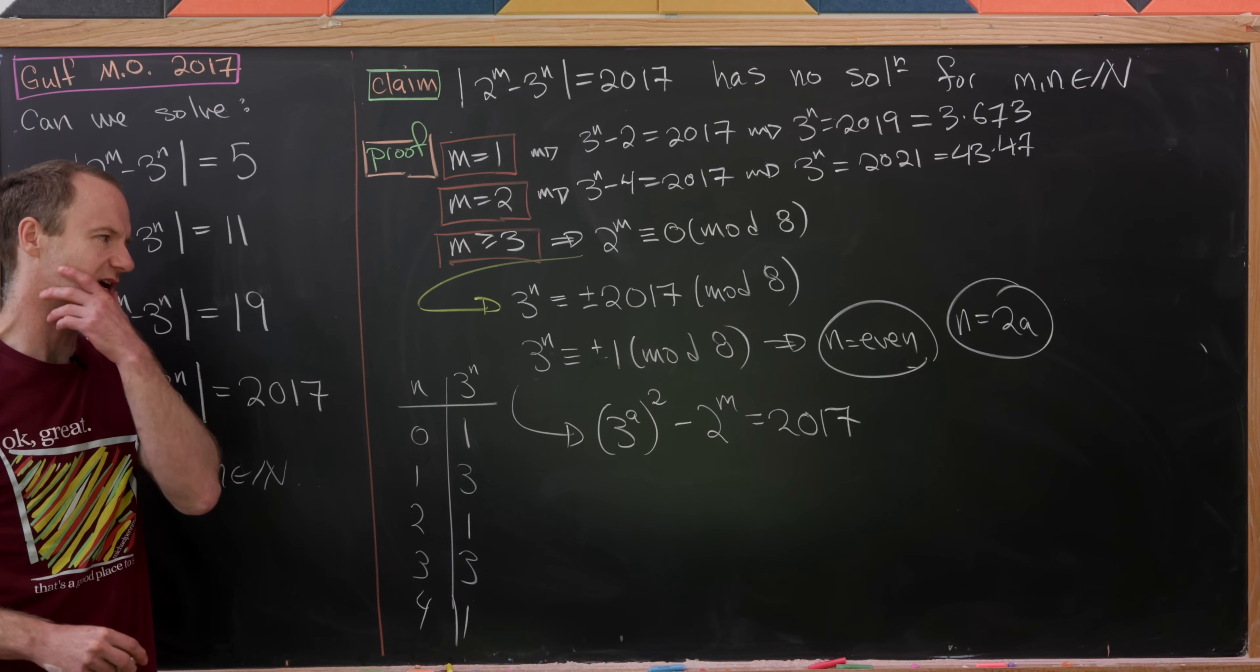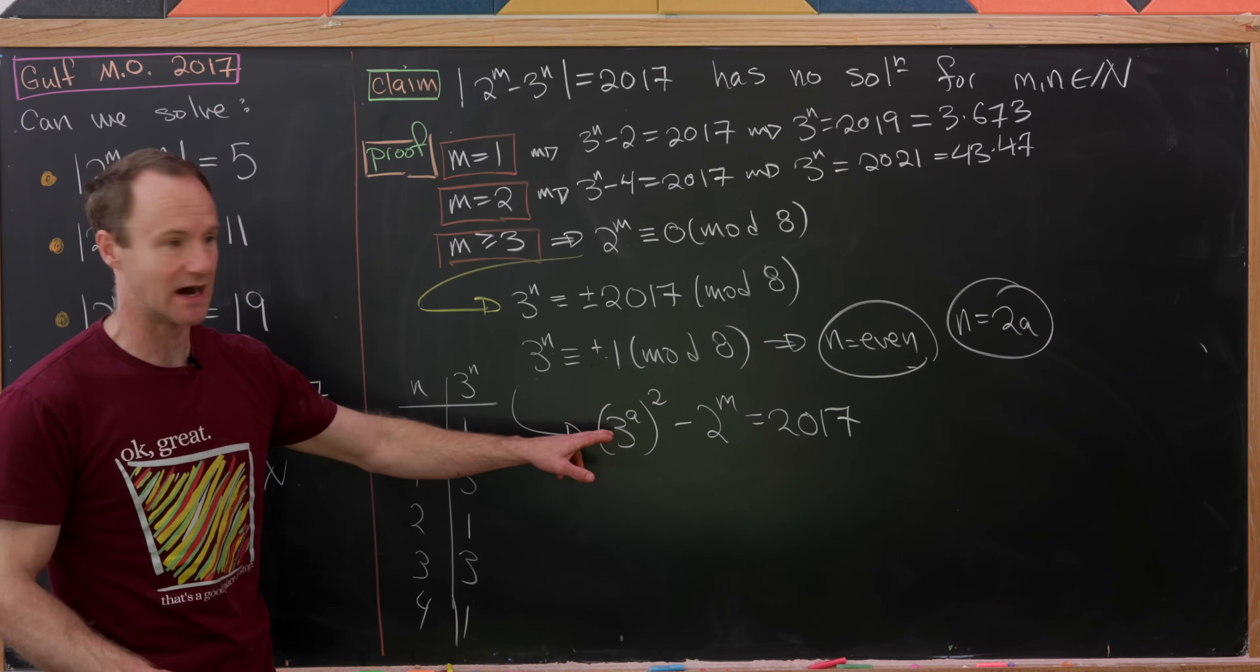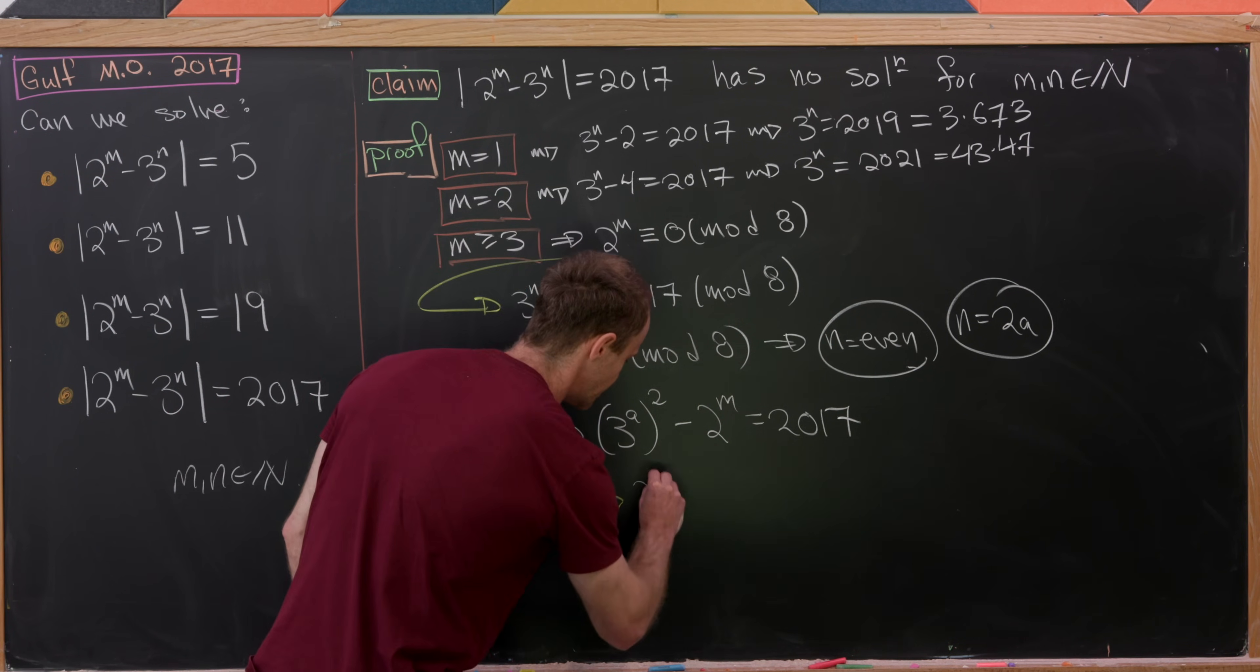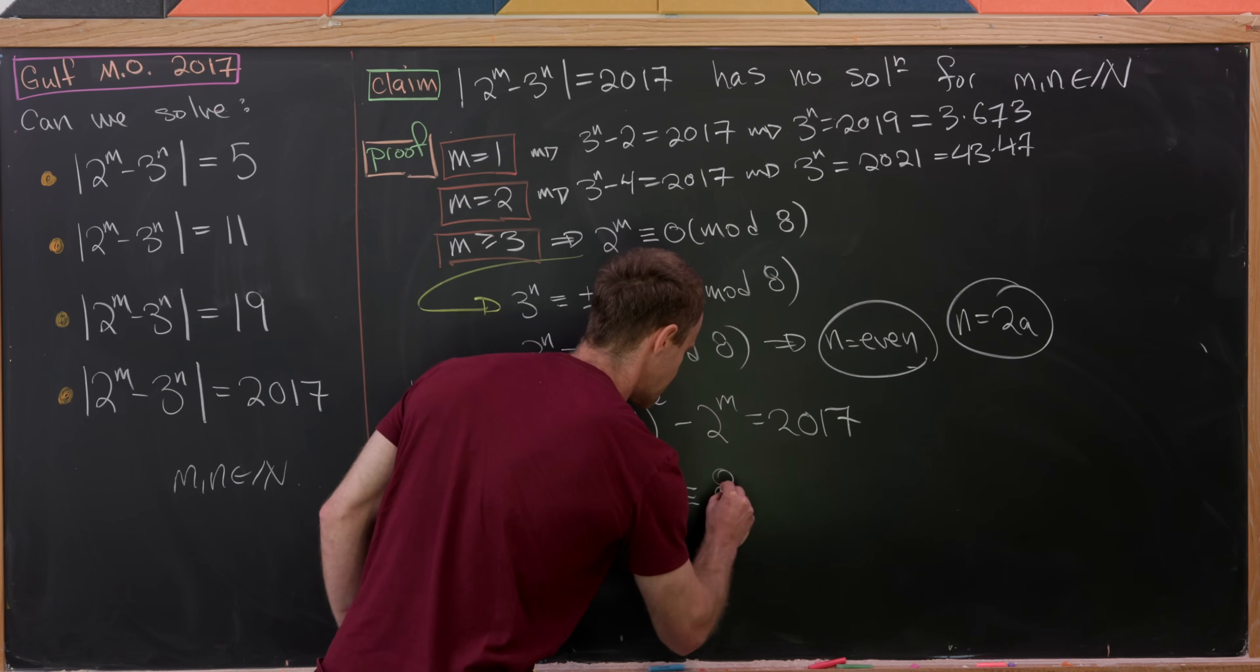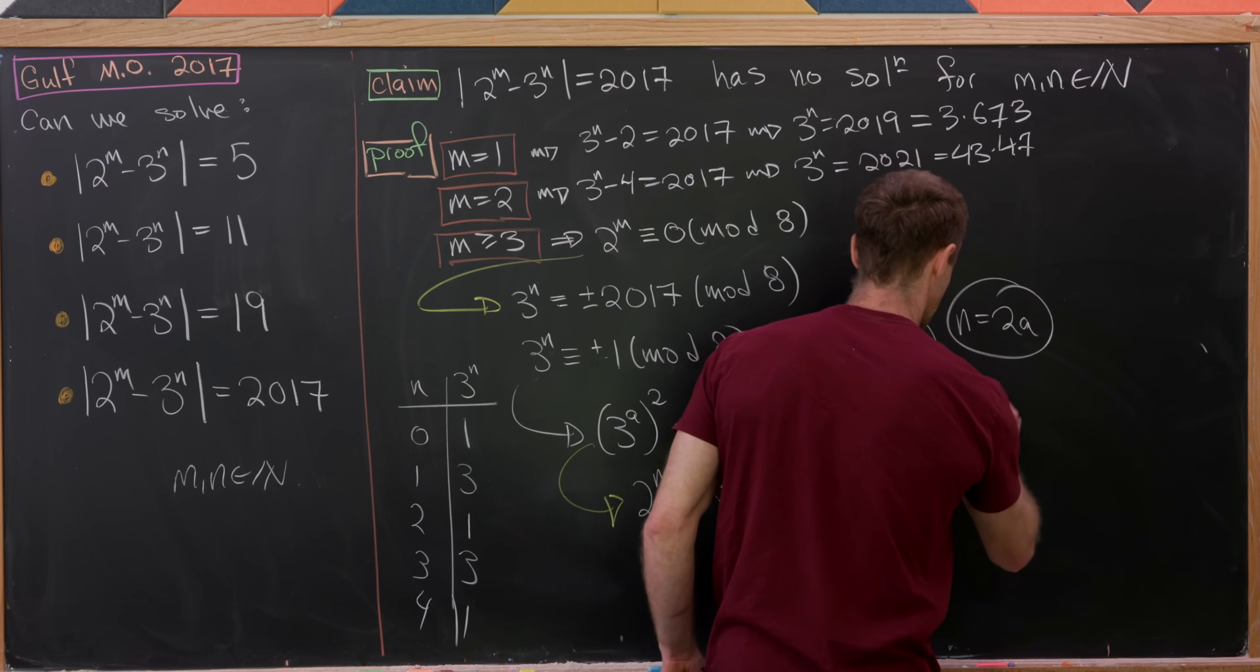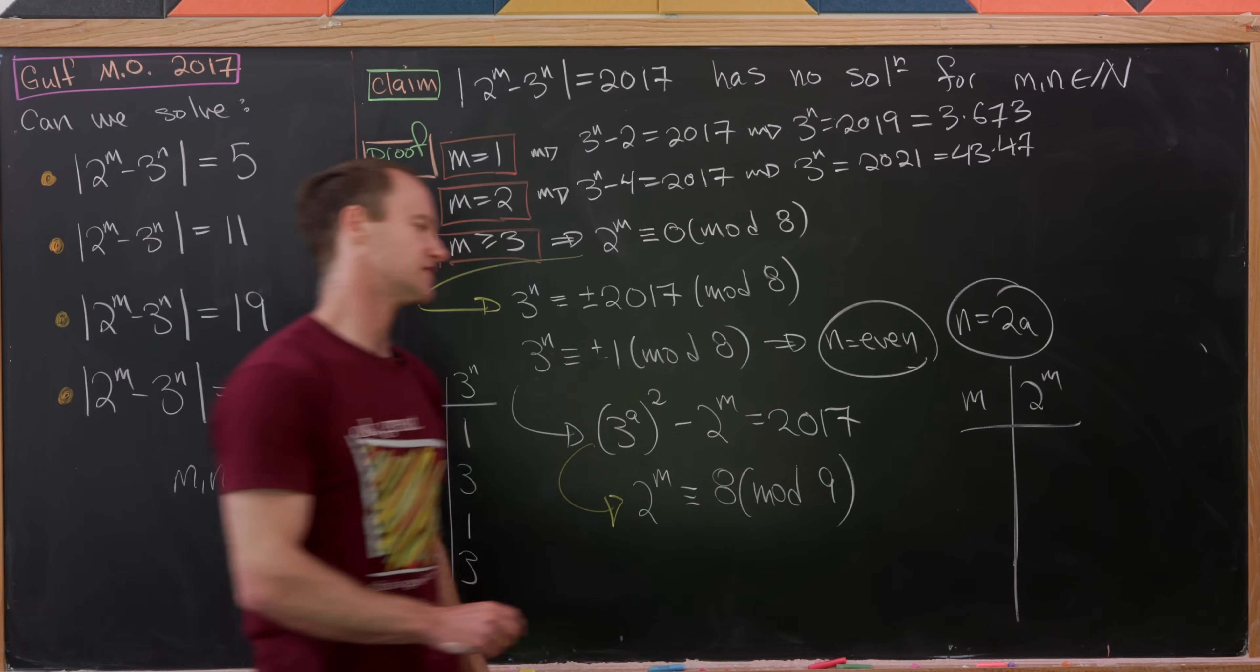Now where would we like to go from here? Well now we'd like to get a handle on m and we'll do that by reducing mod 9 because we know that that must be a multiple of 9. So reducing this whole thing mod 9 will lead us to 2 to the m is congruent to 8 modulo 9. But where do we go from here? Well we're going to make another chart here. So in this case it'll be m and then it'll be 2 to the m and just keep in mind that we're working mod 9 and we want to achieve 8.